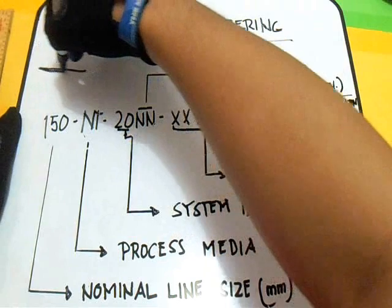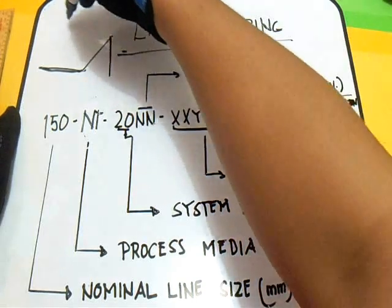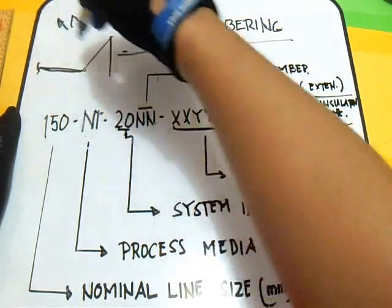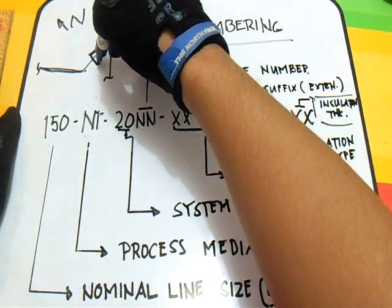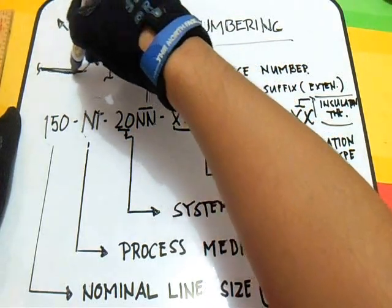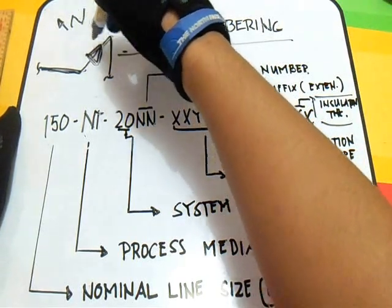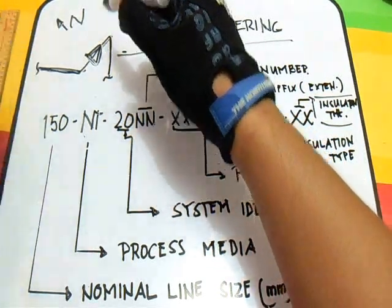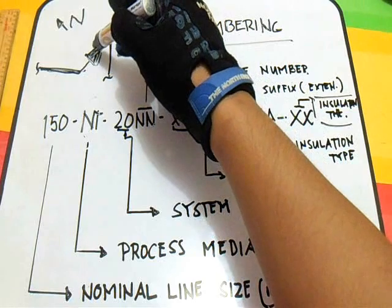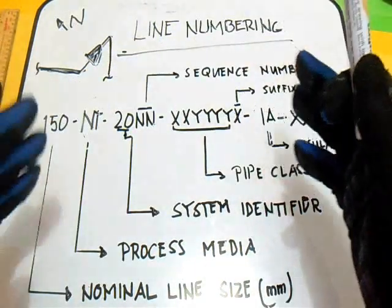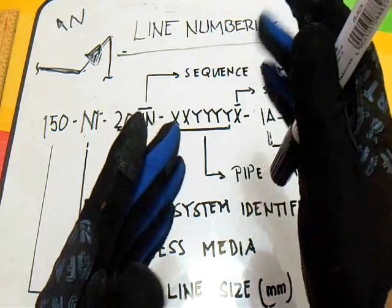So in the isometric drawing, if you see this — this is a line's isometric. This is a line, this is a line, this is a line in the isometric. This is very important — this arrow. This arrow is the flow direction. Remember, this is the flow direction. This is very important because, for example, for the check valve, you can see the flow direction.